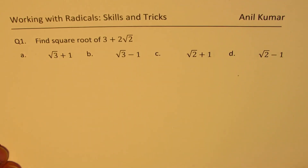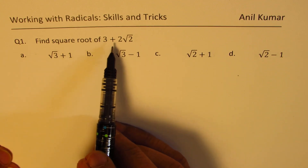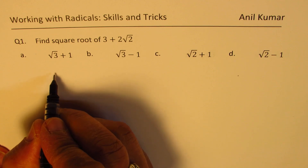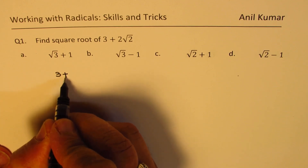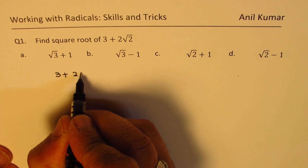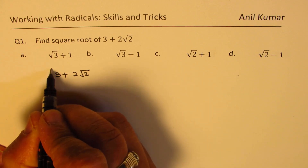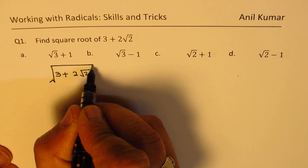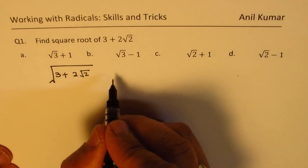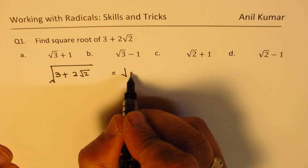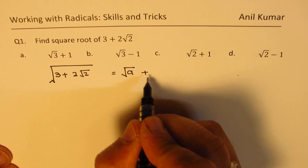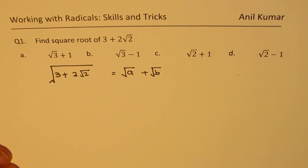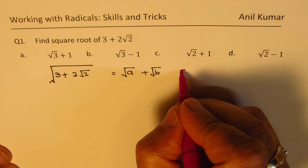Question number one: find square root of 3 plus 2 square root 2. The strategy is like this — we need to find square root of 3 plus 2 square root 2. Let us assume that this value is equal to square root of a plus square root of b. Now if we square both sides, what happens?